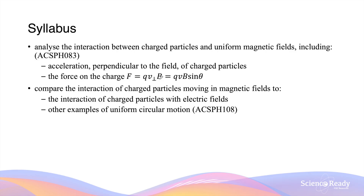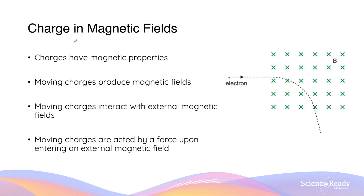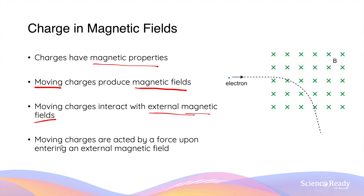Hello everybody. This video is on the motion of a charged particle inside a magnetic field. Charges, besides being charged, can also have magnetic properties. Specifically, moving charges will produce their own magnetic fields, so moving charges will behave as magnets. As a result, moving charges will interact with an external magnetic field. In this video, we'll look at how moving charges will be acted upon by a force due to the external magnetic field.